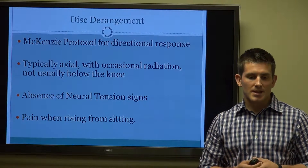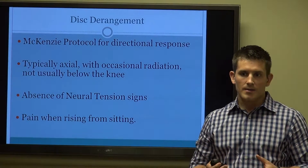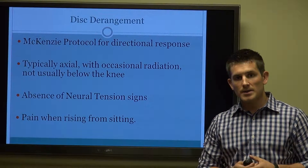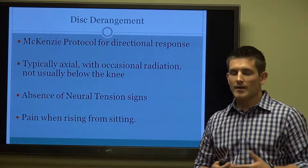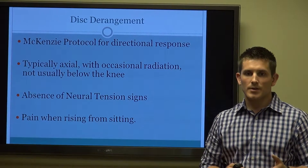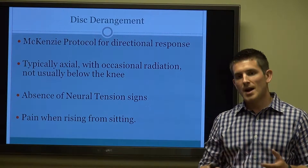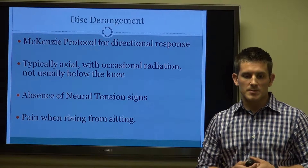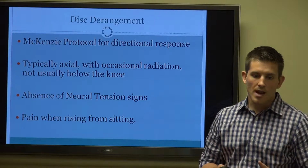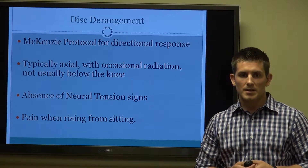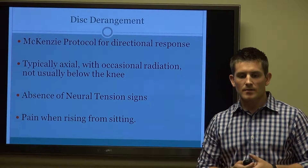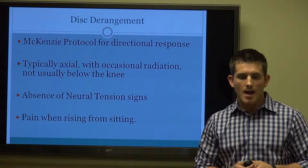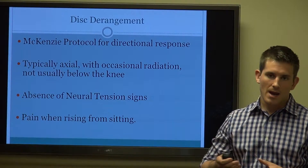Disc derangement is one of the most common presentations, especially for acute back pain. The disc is involved in approximately 80% of people with acute symptoms. We generally evaluate disc patients with a McKenzie protocol for directional response. Robin McKenzie was a New Zealand physiotherapist who developed a way to diagnose and manage acute disc derangement patients. With a disc derangement, it's typically axial in nature, occasionally with radiation not usually below the knee. There's generally an absence of neural tension signs, no burning leg pain in dermatomal distribution, and generally pain when rising from sitting or with prolonged sitting and posture.